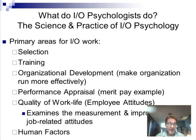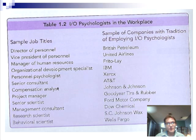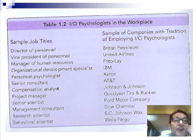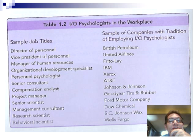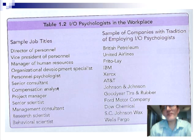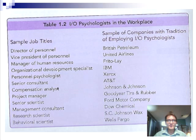Sample job titles in IO psychology include director of personnel, VP of personnel, manager of human resources — and there's a lot of overlap with HR offices. You'll also find organizational development specialist and research scientist as common titles.